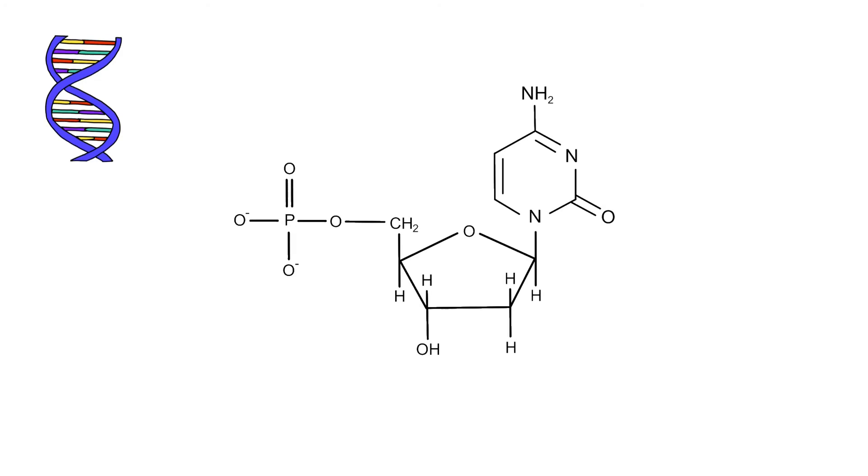DNA consists of three basic components: a phosphate group, a 5-carbon sugar called 2-deoxyribose, and a cyclic nitrogen-containing compound which we call a base.